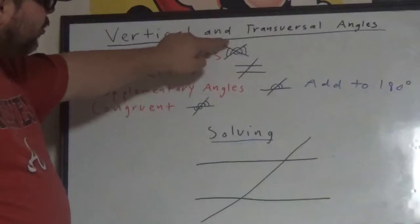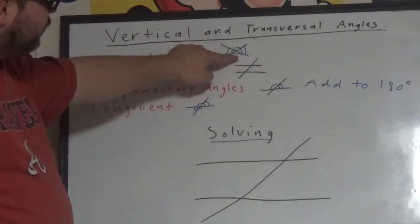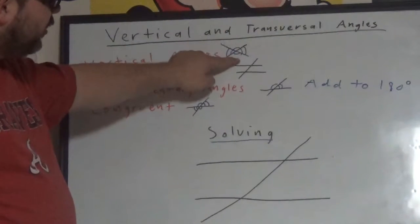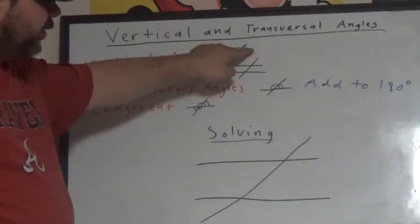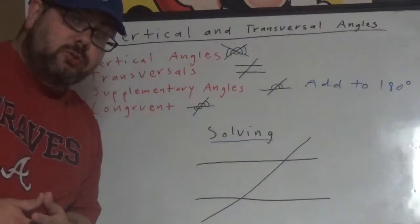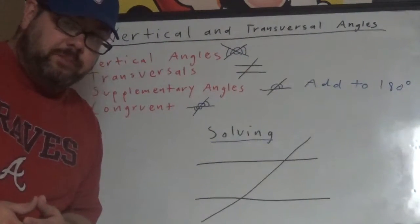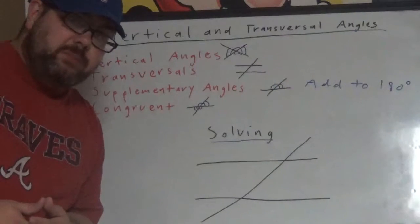The opposite angles are vertical angles. These two would be vertical angles, and then these two are also vertical angles. Vertical angles are always congruent with each other, meaning that they have the same measurement.